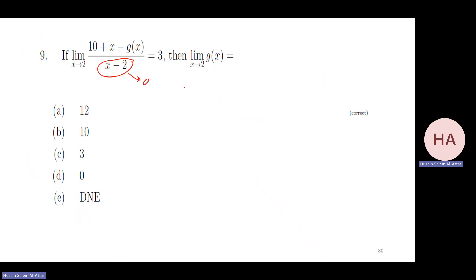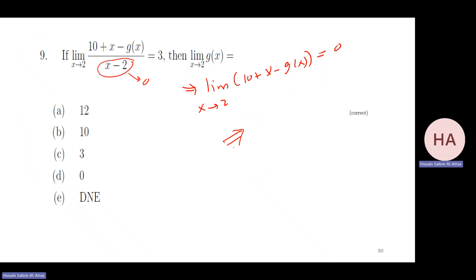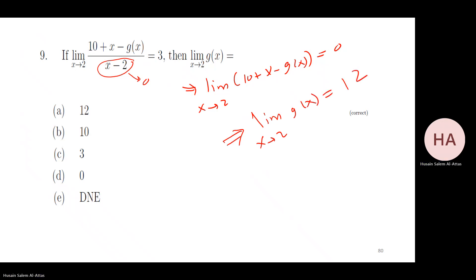Same idea: as x goes to two, the numerator goes to zero, which means the limit of g of x as x goes to two must equal twelve. The limit of the numerator exists, the limit of the denominator exists, and both equal known values, so their ratio exists. Therefore the limit of g of x as x goes to two should be twelve.